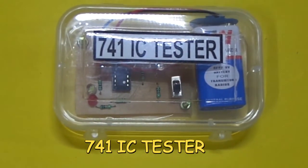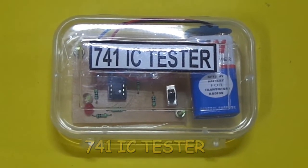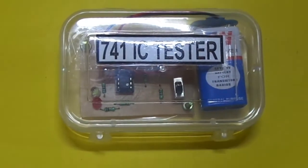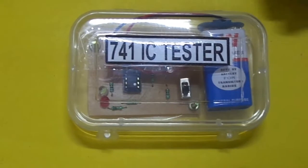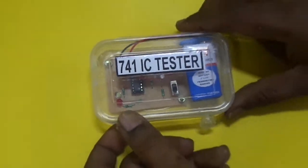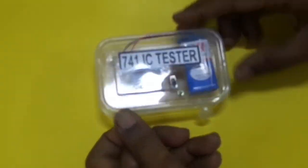The 741 IC is a very important IC for educational purposes and hobby projects. It is used widely in analog circuits, so we constructed one circuit to test the IC741.